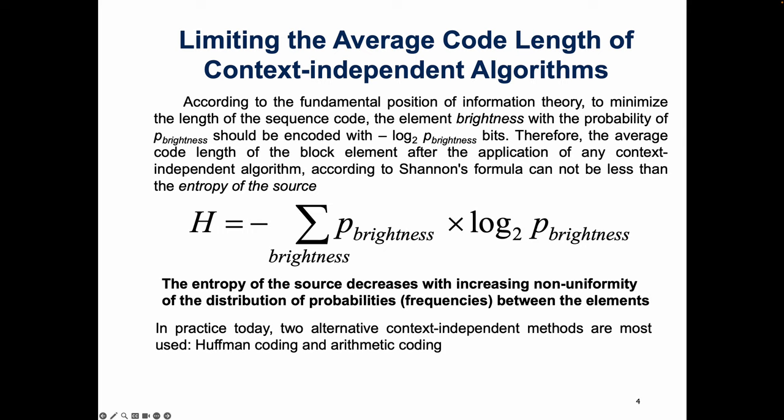The entropy of the source decreases with the increasing non-uniformity of the distribution of probabilities between the elements. In practice today, two alternative context-independent methods are most used: Huffman coding and arithmetic coding.